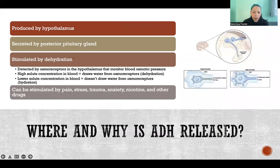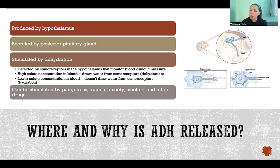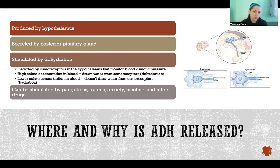So where and why is ADH released? It is produced in the hypothalamus and secreted by the posterior pituitary gland. It's a rare hormone where it's produced in one place but stored and secreted in another place.